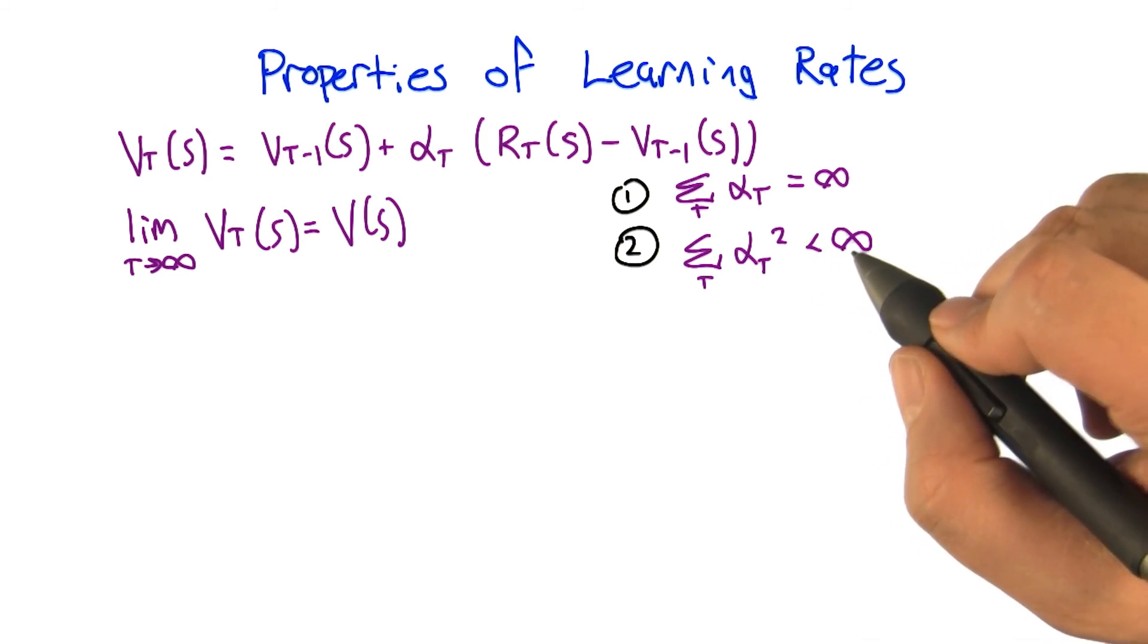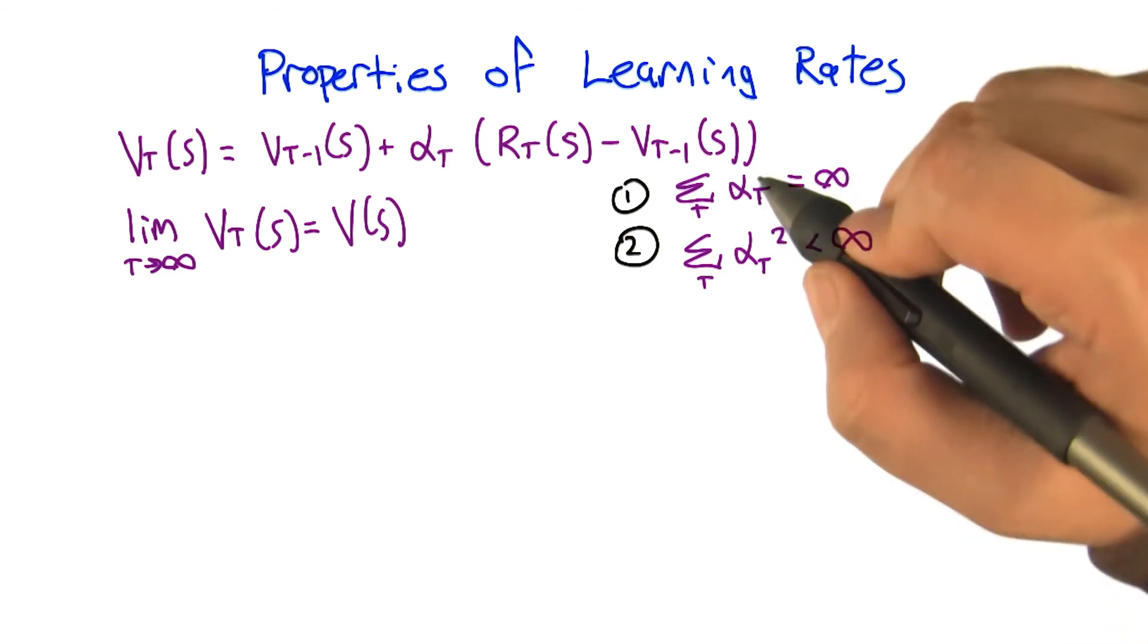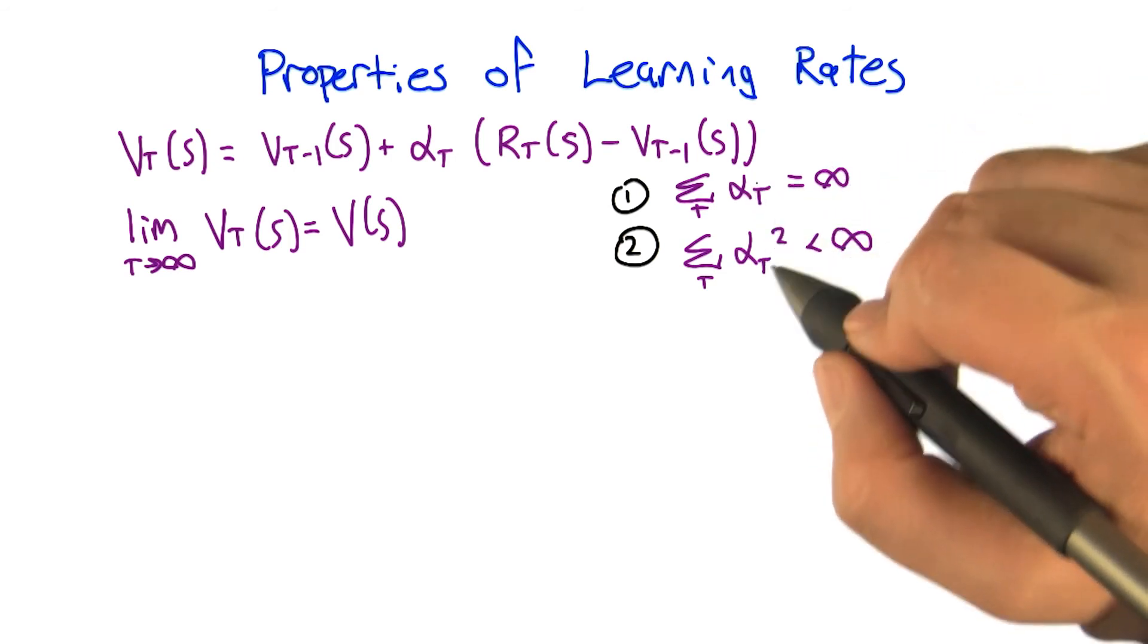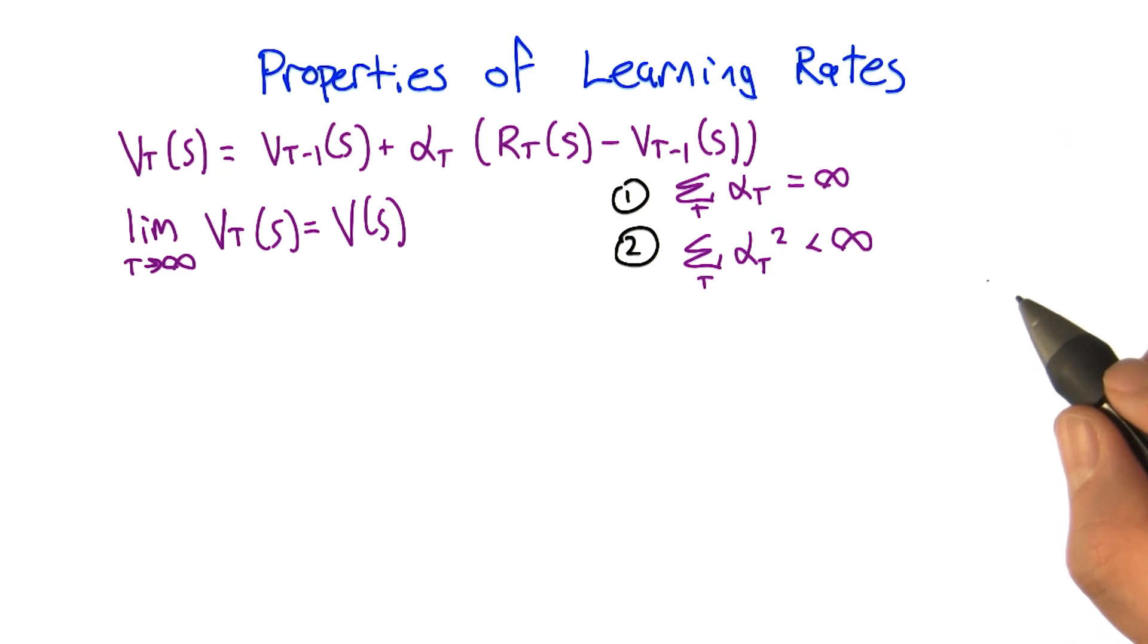So if you just accept that these are the two conditions that make sure that that's true, that gives us a way of choosing different kinds of learning rate sequences. Okay, so what's some alphas that satisfy that and some alphas that don't? Alpha sub t's that satisfy that and some that don't.